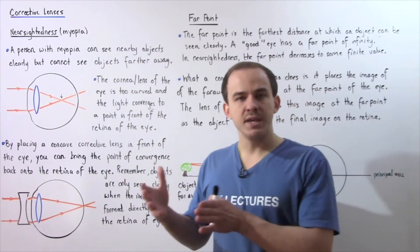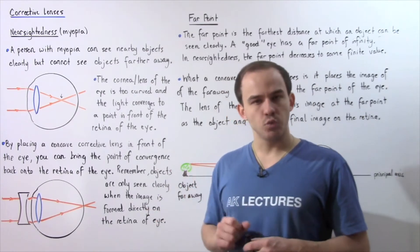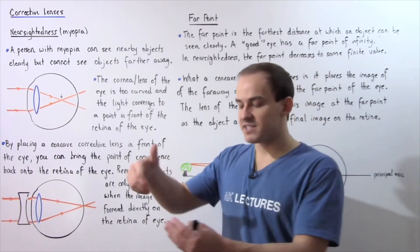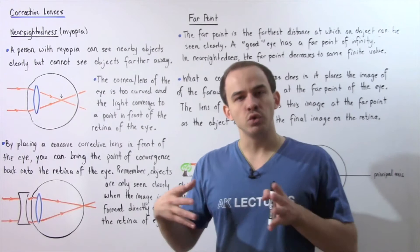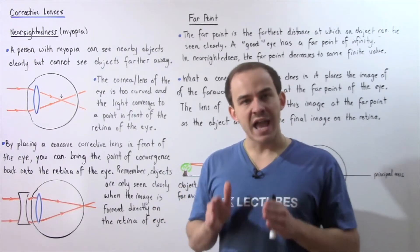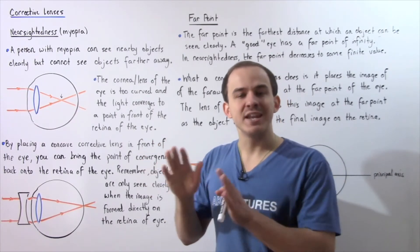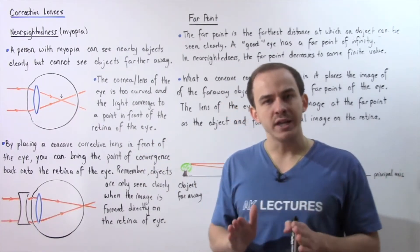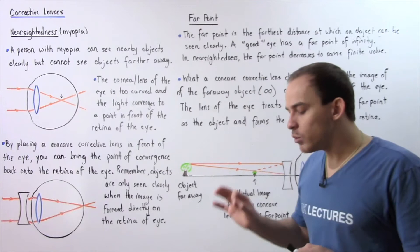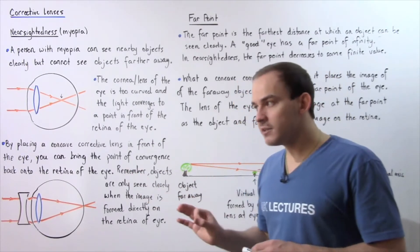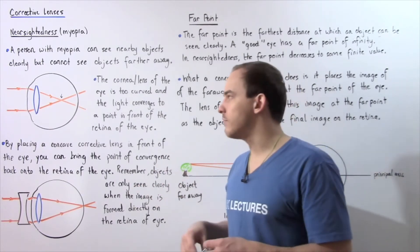Myopia can be caused by either one of two reasons: either the cornea-lens system of the eye is too curved, or the eyeball shape is elongated — too long. In either case, the rays of light entering the cornea are bent too much and converge at a point in front of the retina. The eye will only see an object clearly if the image is formed directly on the retina.